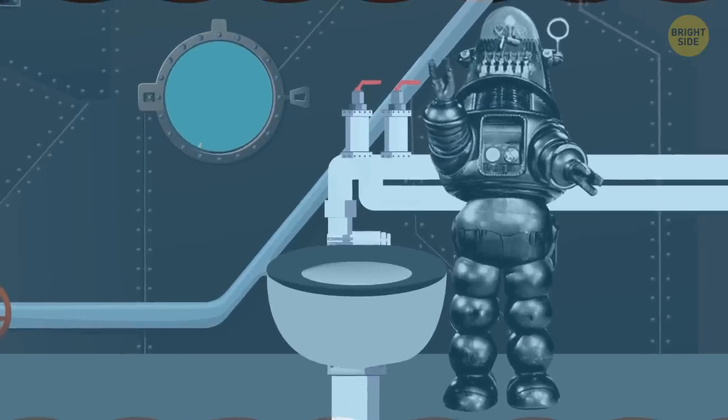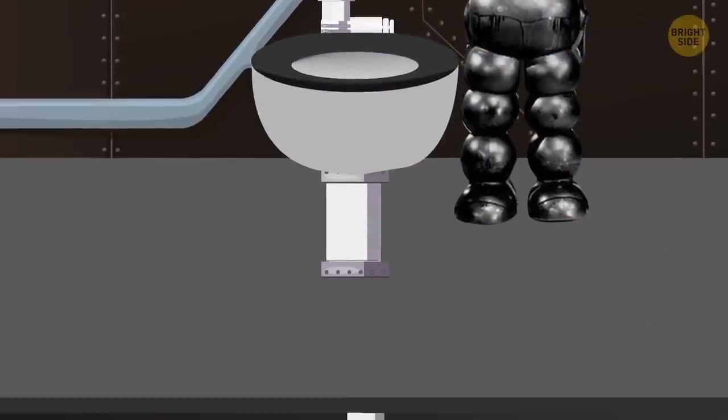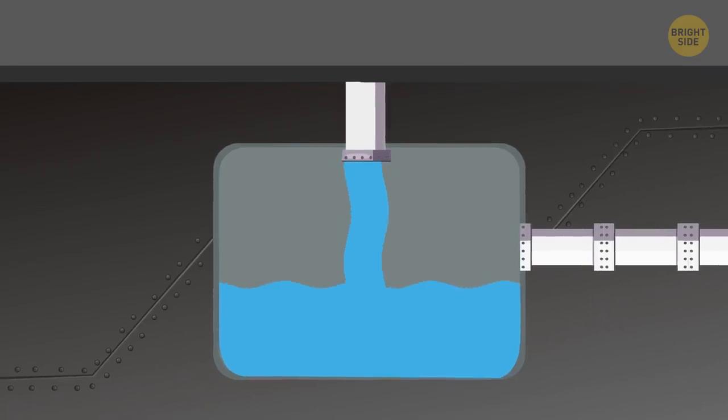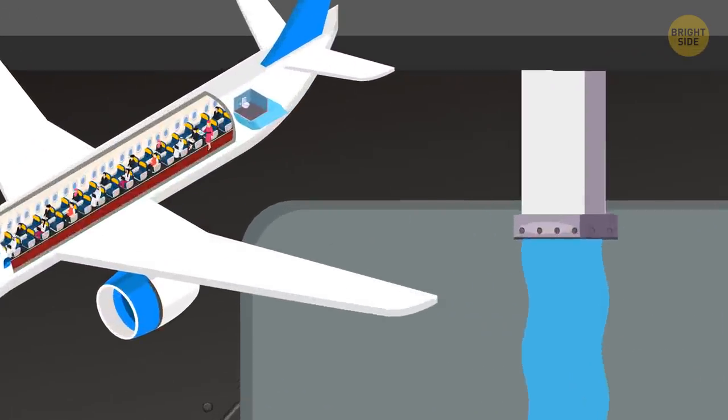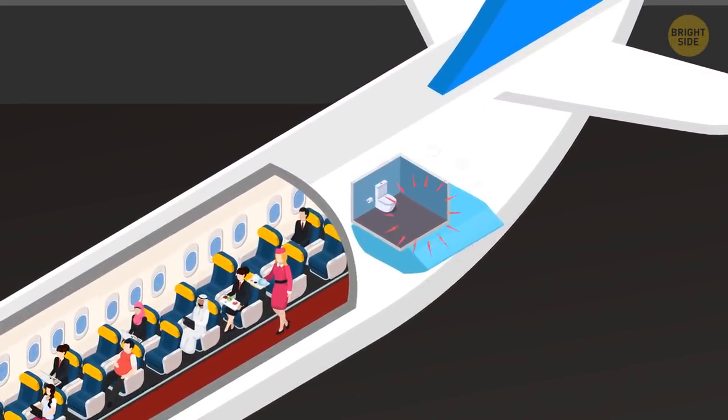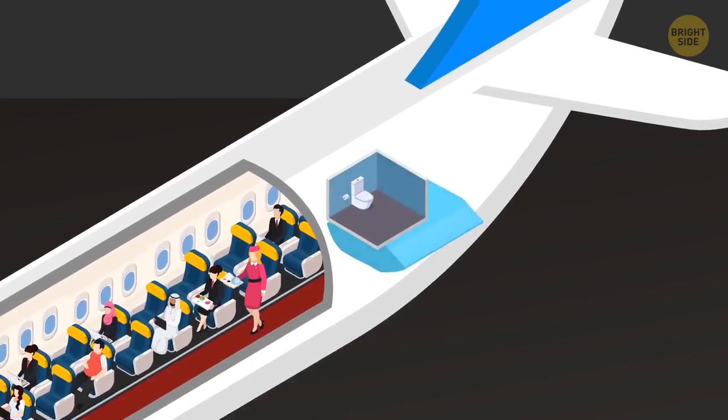So when you flush, you open a valve, and the stuff in the bowl gets washed into a holding tank below, a lot like toilets on airplanes. But here's the difference. Eventually, that tank gets full.